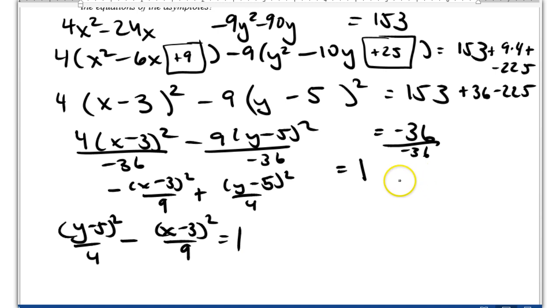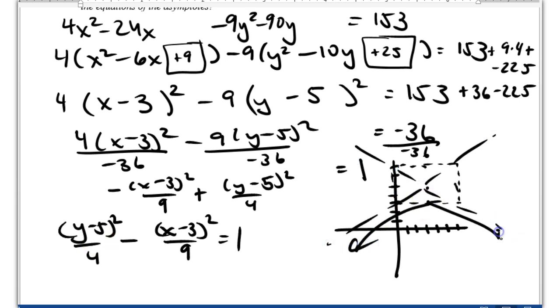From there, it's easy peasy to graph it and find all the stuff. I've got a center at 3, 5, x radius of 3, y radius of 2. Draw my box. Draw my asymptotes. I know because the y values are positive that this thing's opening up and down.